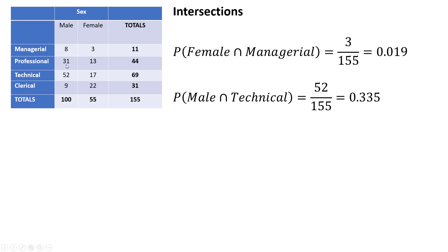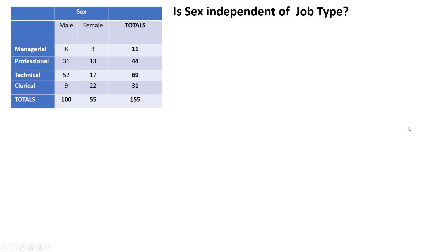What if we want to know intersections? Each of these cells is an intersection — male and managerial, managerial and female, professional and male, and so on. So if I want the probability that someone is female and managerial, I go to the female and managerial cell, which is only three out of the total — not very many female managers; we might have a problem with this company. For male and technical, I find the technical row under male — 52 — and divide by the total sample size.